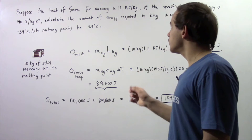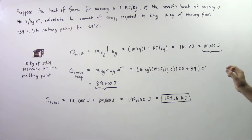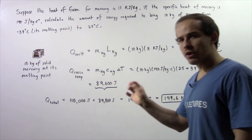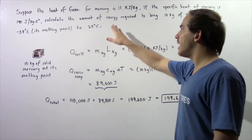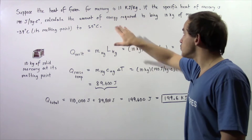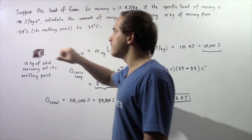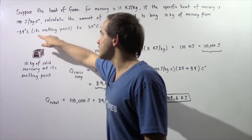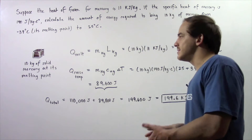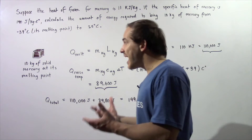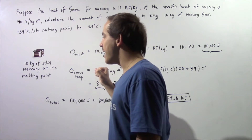Suppose the heat of fusion for mercury is 11 kilojoules per kilogram. If the specific heat of mercury is 140 joules per kilogram times Celsius, calculate the amount of energy in joules that is required to bring 10 kilograms of mercury from negative 39 degrees Celsius, which is the melting point of mercury, to 25 degrees Celsius.